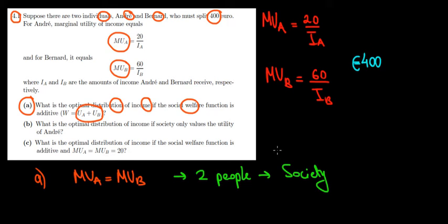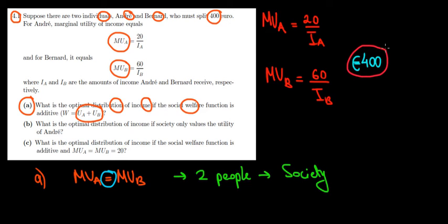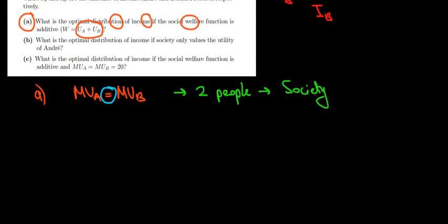The intuition is that one guy might value money more than the other — maybe he's more poor or has more responsibilities. So we have to think about how to make his life better, not only our own. That's why we think about both utilities, and when we allocate the money we must do so such that the marginal utilities are going to be equal. We also need to keep in mind that we have 400 euros to distribute, so the total income in this society equals 400 euros.